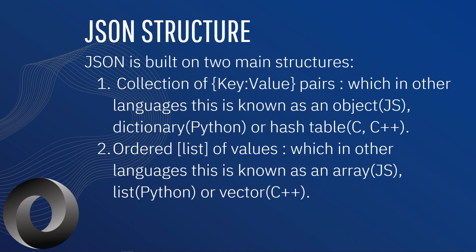What is the structure of JSON? JSON is built on two main structures. The first is a collection of key-value pairs, which in other languages is known as an object like in JavaScript, a dictionary like in Python, or a hash table in C and C++. The second main structure is an ordered list of values, which in other languages is known as an array like in JavaScript, a list in Python, or a vector in C++.